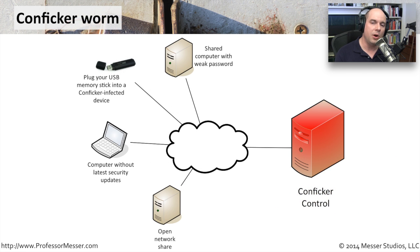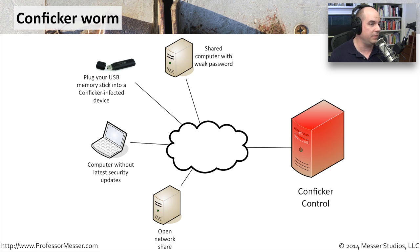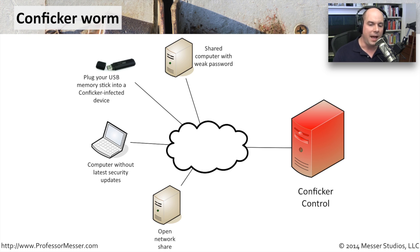Another reason it's so hard to find and remove these worms from every computer in your organization is because the worm writers spent a lot of time making sure the worm can propagate itself in many different ways. A very good example is a relatively active worm still seen in environments today, called Conficker. The reason we still see it is because out on the internet there's a Conficker control system that communicates and provides different aspects of Conficker back to infected systems.